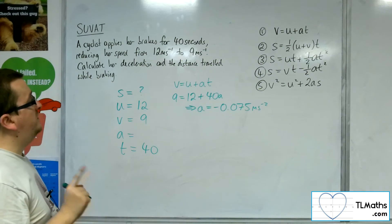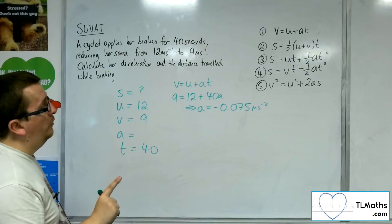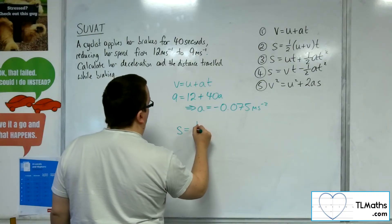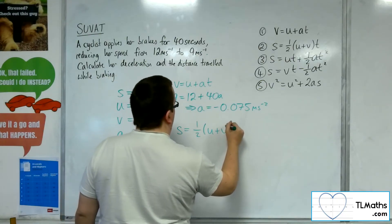So now I want the equation that doesn't have A involved, and that's equation number 2. So S is equal to one half times (U plus V) times T.